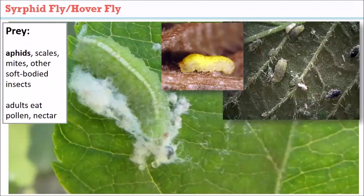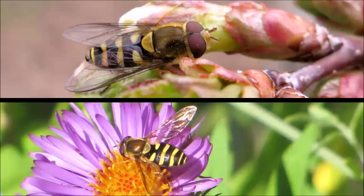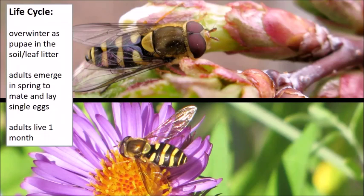Syrphid flies share the same diet as lady beetles and lacewings — aphids, mites, and scale crawlers. But the adults, like lacewings, are not predacious; they need flowers, pollen, and nectar to survive, mate, and lay their eggs. Adult hoverflies overwinter as pupae in the soil or protected areas and can emerge very early, even before leaves come out. They sort of look like bees, but they're flies — bees have two sets of wings and flies have one, and hoverflies are smaller.